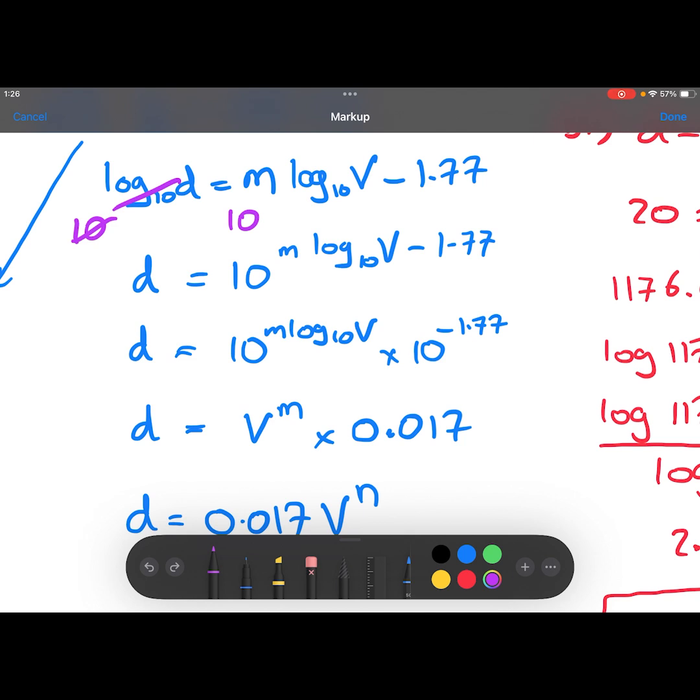But I can split that power up using index laws. I've split it up by multiplying the bases. So I know that this is the same thing as this, because if I multiply the bases, I add the powers together, and that gives me this. Then I've used the laws of logarithms to take this m and move it to be a power on the V, which then allows the 10 to the power of log base 10 to cancel out, and I just get left with the V to the power m.